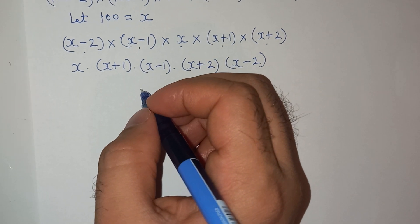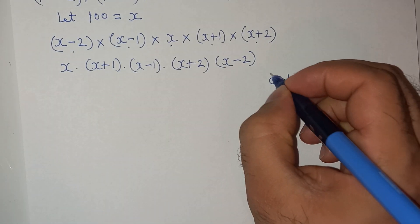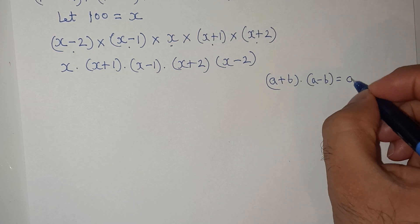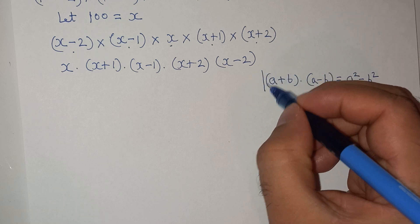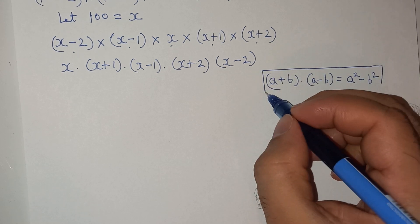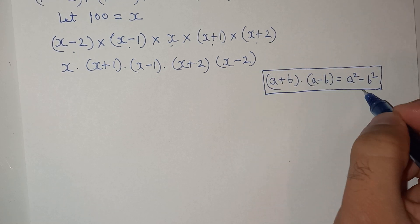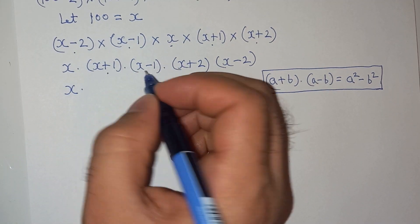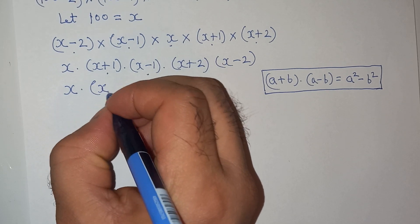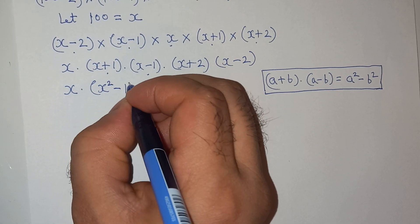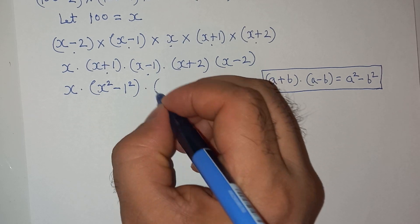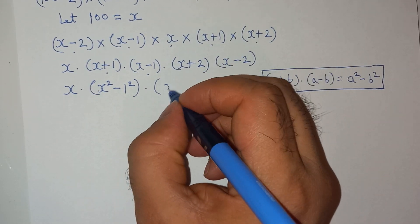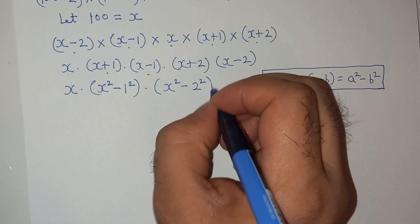As you know, the formula (a + b)(a − b) = a² − b². Using this formula, (x + 1)(x − 1) can be written as (x² − 1), and (x + 2)(x − 2) can be written as (x² − 4).